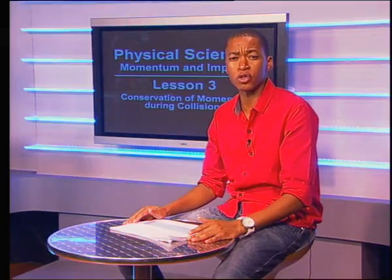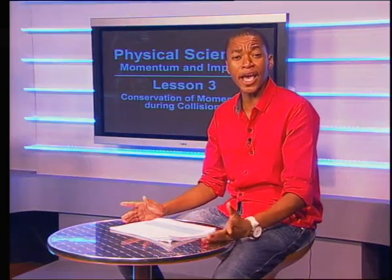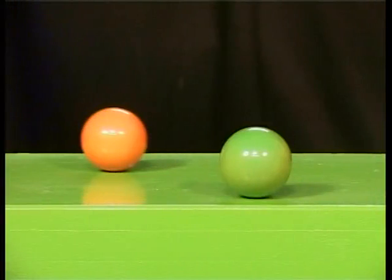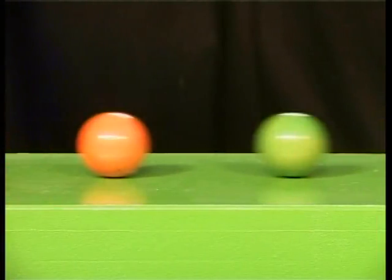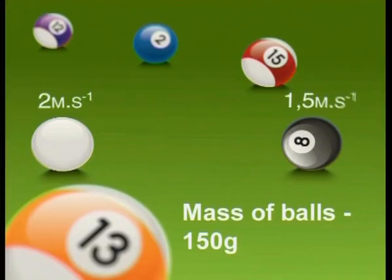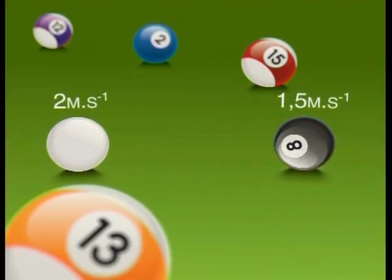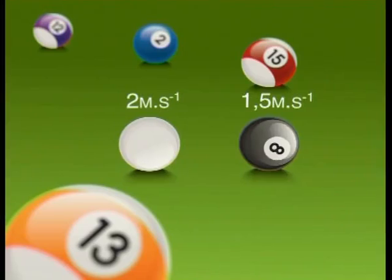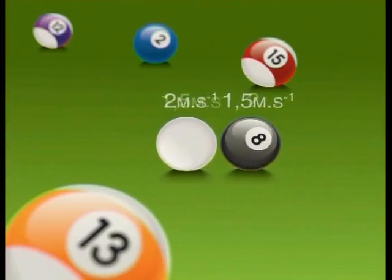Let's apply the conservation of momentum to collisions of two objects moving along a straight line. Here, we have a game of billiards. Hi, everybody. I'll need a very smooth surface to prevent friction. And these two shiny balls, which also offer very little resistance. Watch what happens as the two balls move towards each other. Both balls have a mass of 150 grams. Ball one is traveling at a speed of 2 meters per second. And ball two is traveling at a speed of 1.5 meters per second. They collide head-on.